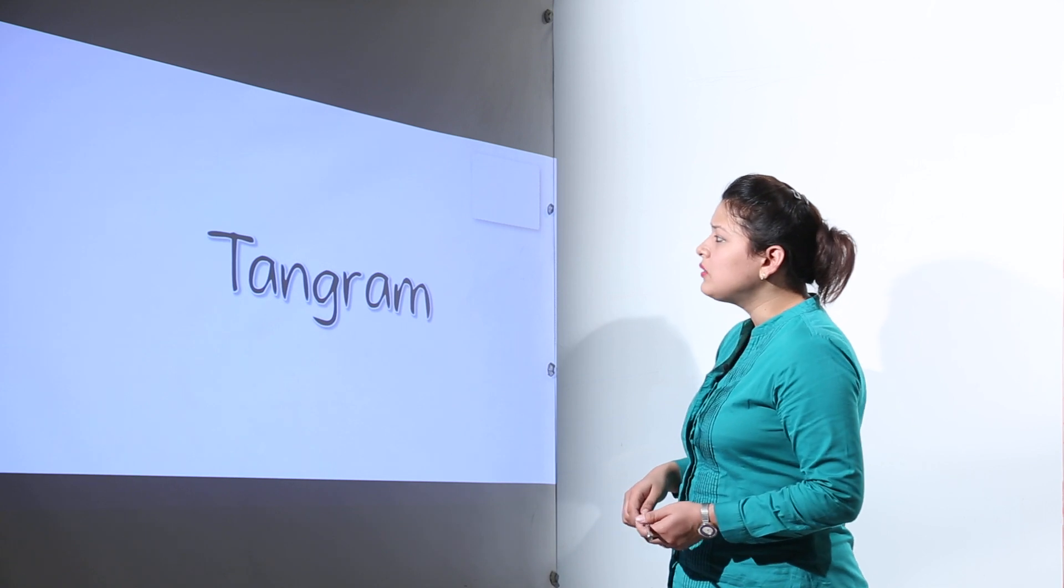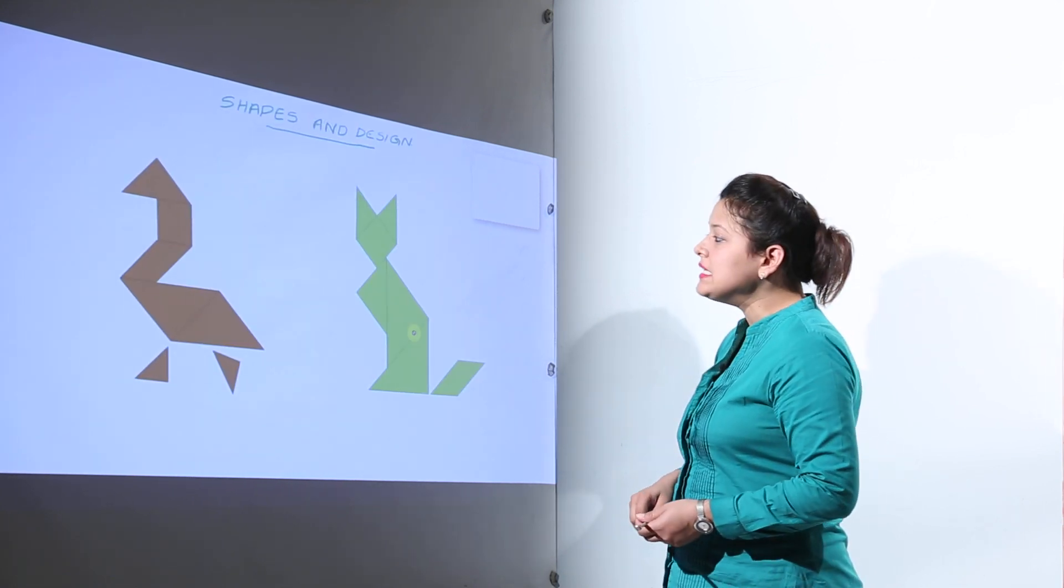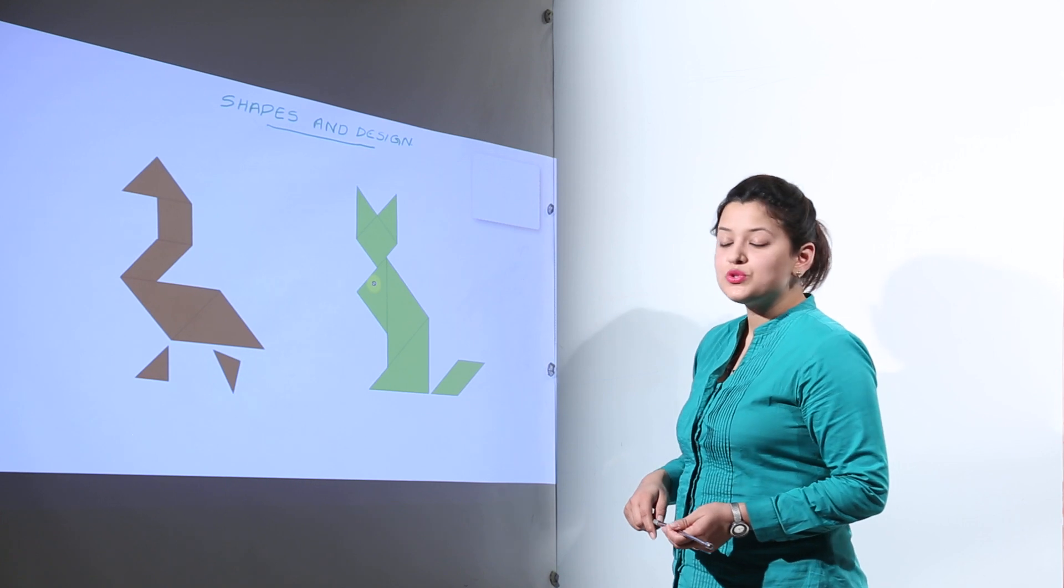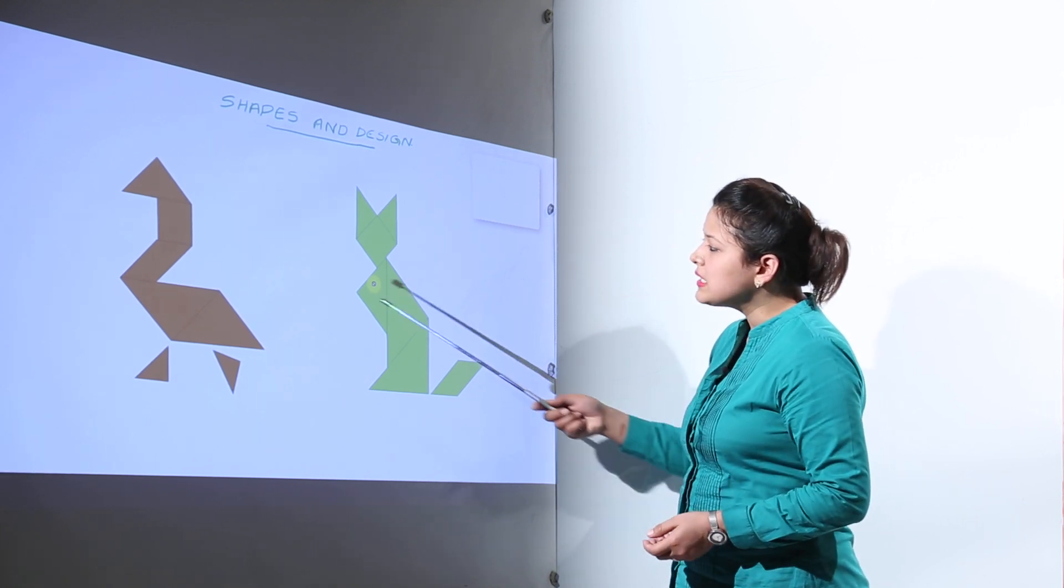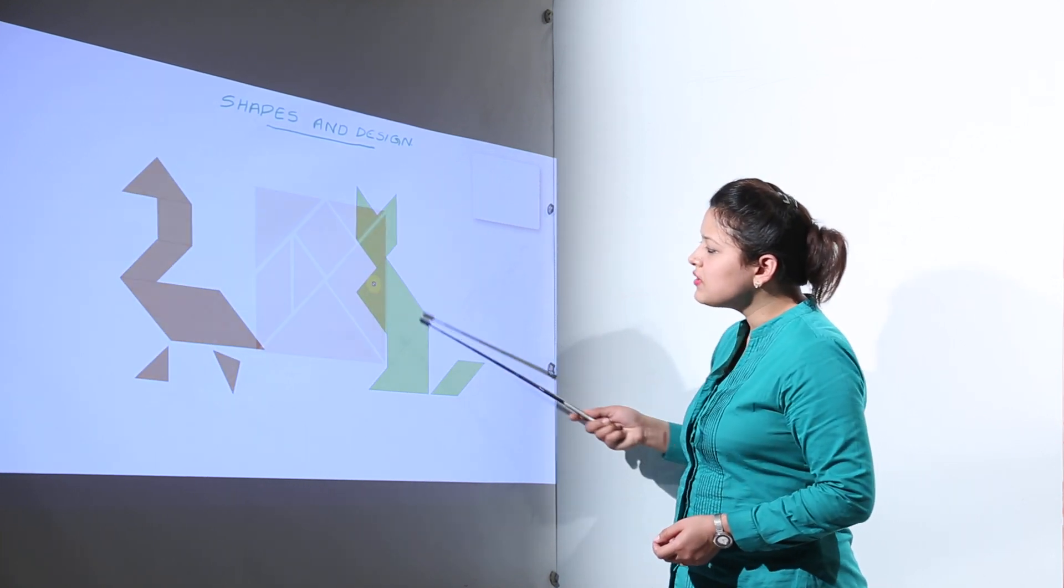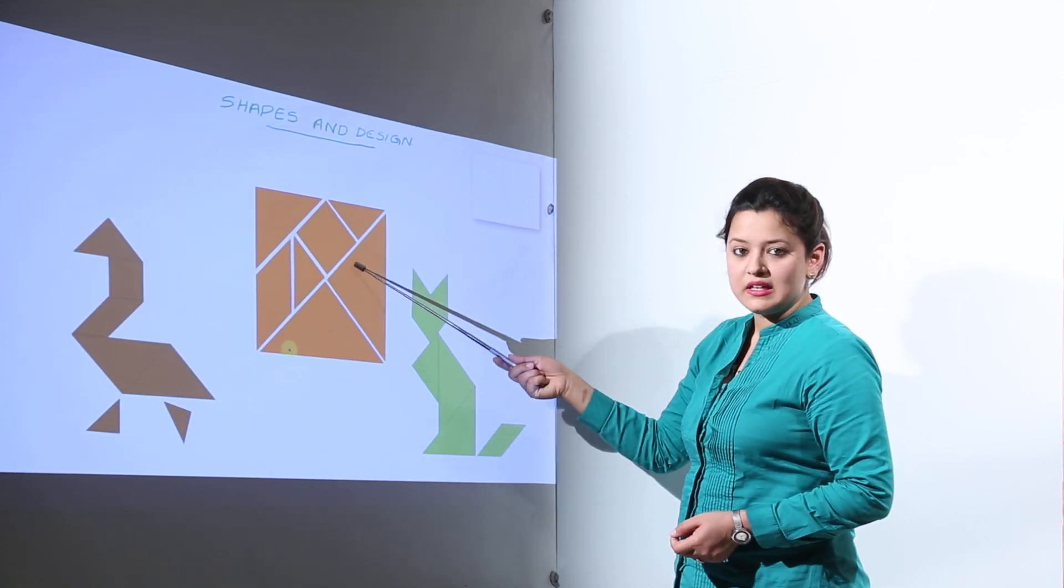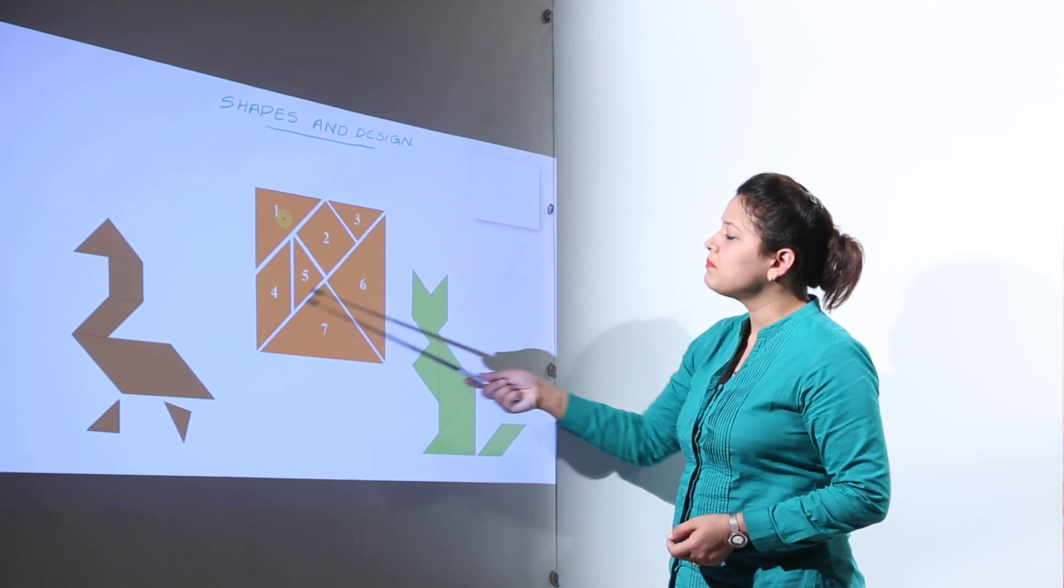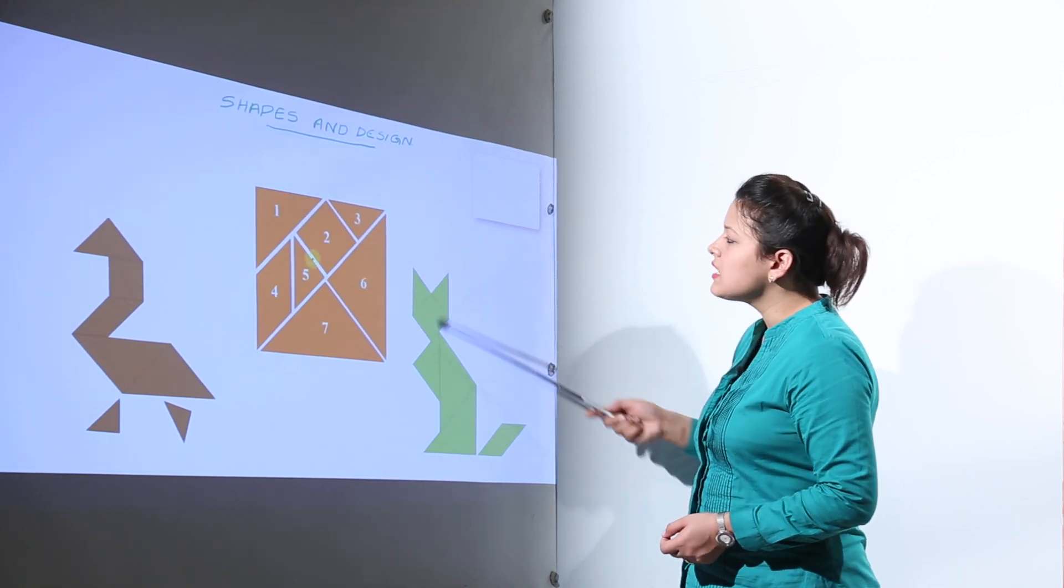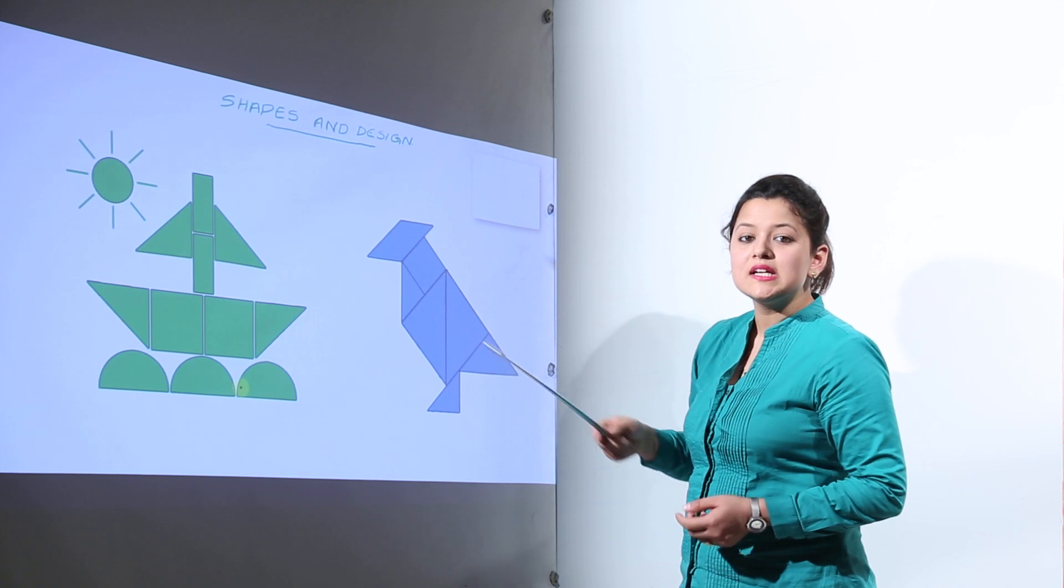And what about a tangram? Tangrams are the Chinese tiles that are used to make different patterns. Now you can see these two patterns over here. So this is a tangram that has seven tiles. So we can make different patterns like this and like this out of this seven tile tangram.